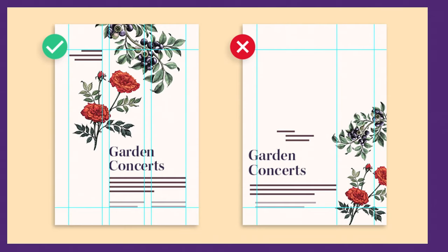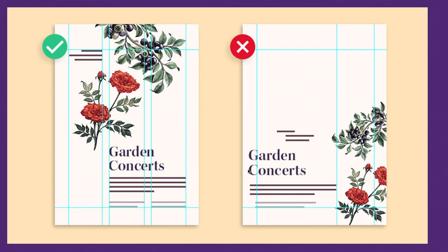Here is good alignment versus bad alignment. As you can see, the good example has guides showing where everything is lined up. The 'Garden Concerts' text is lined up with the description and even the sub-description — whether that's a call to action, website address, or phone number — also aligned. There's nice, clean white space all the way around it and the flower is aligned beautifully. Now the bad design has the same graphical elements but random text that goes outside of the guides.